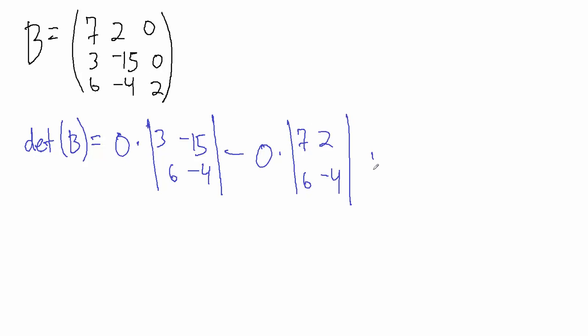And then lastly, plus 2, so plus sign because of the sign pattern that we follow when we do this method. Plus 2 times the determinant of what? Well this 2 is in the third row and third column, so if we ignore the third row, ignore the third column, what's left over? 7, 2, 3, and negative 15.